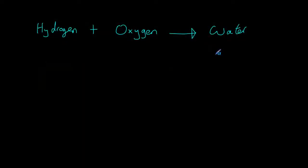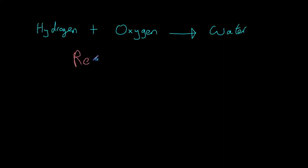Here we have a simple chemical equation — in this case it's a word equation — and we have hydrogen plus oxygen will give us water. So two things being added together will form our water on the other side. We give two different names for the things we start with and the things we end up with. On the left hand side of your equation, these substances are known as reactants.